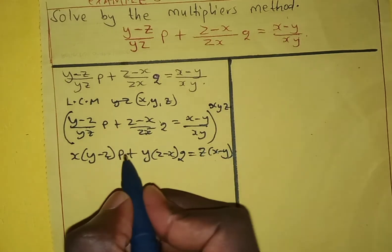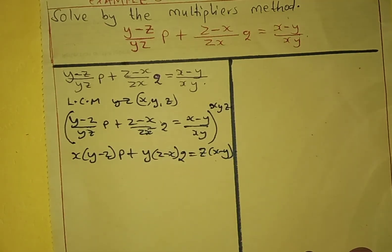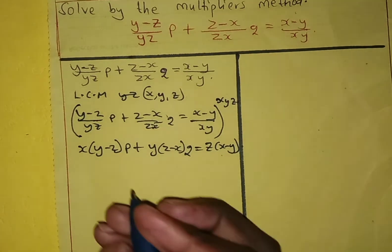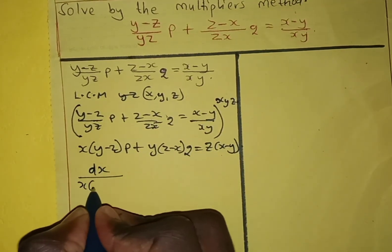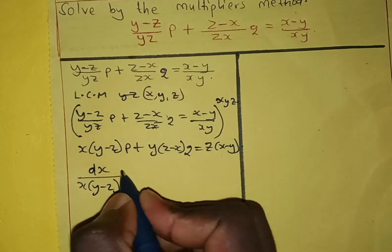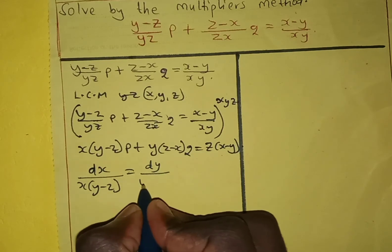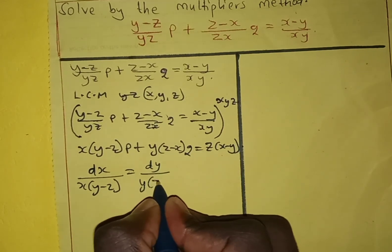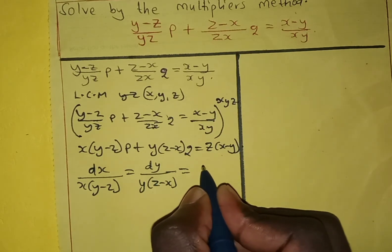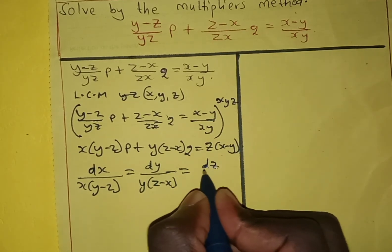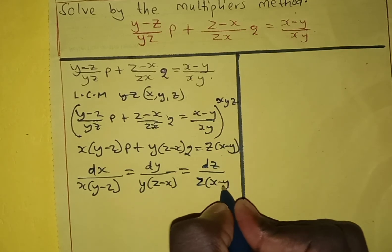Now let us express this equation in auxiliary form. We have dx over x(y-z) equals dy over y(z-x) equals dz over z(x-y).